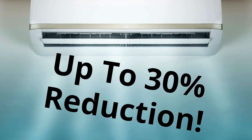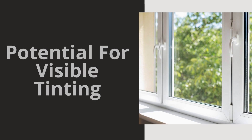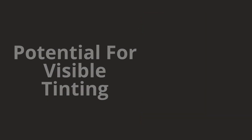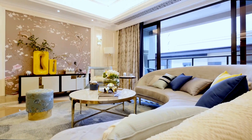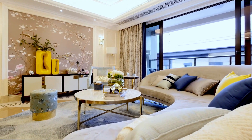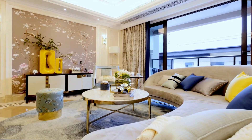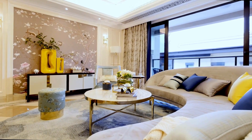Next, you might notice a slight tint. Low-e coatings can sometimes give windows a subtle hue, which might affect the natural light in your home. For some, this is a minor issue, but for others it's a major one. If you're particular about the color and quality of light in your home, it can be a major consideration when deciding if you want low-e glass.